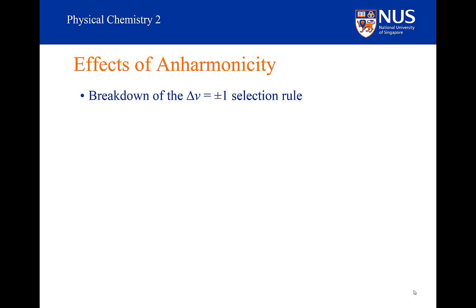This happens a lot in science where you have selection rules. We refer to transitions that break these selection rules as forbidden transitions. But if they are forbidden, why do they occur? This is of course because the assumptions about those transitions don't really hold in the real world. The harmonic oscillator doesn't really hold in the real world because molecules are anharmonic. We call them forbidden because they break that ideal model.